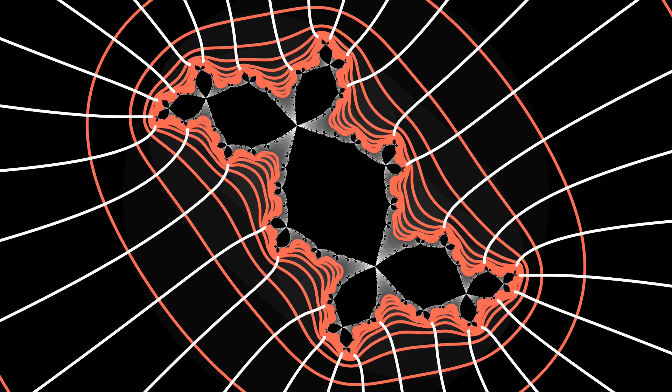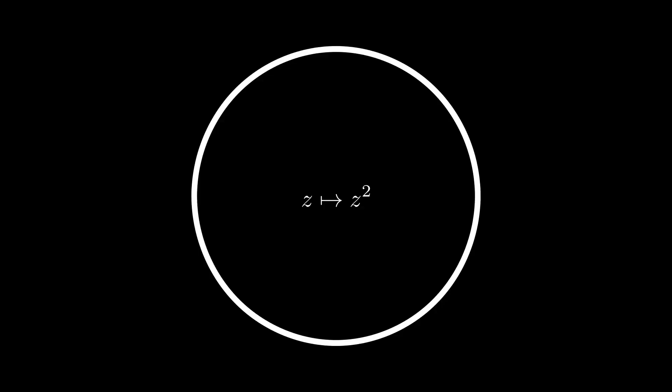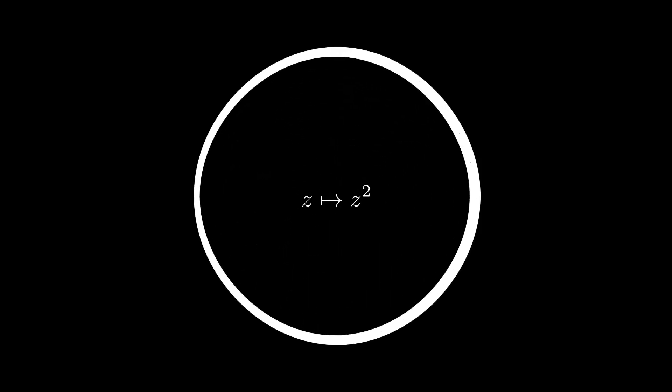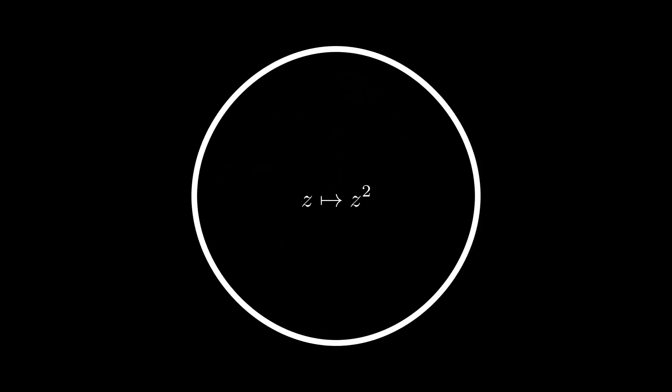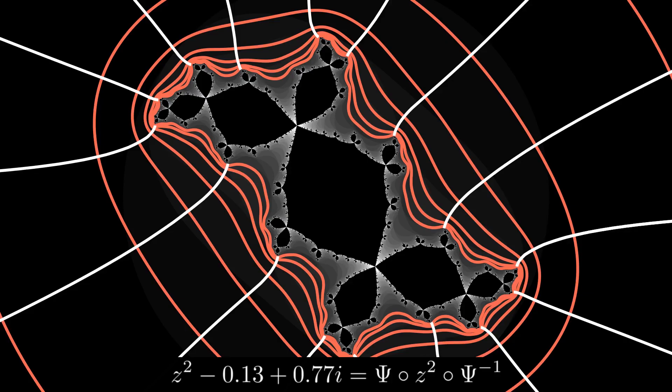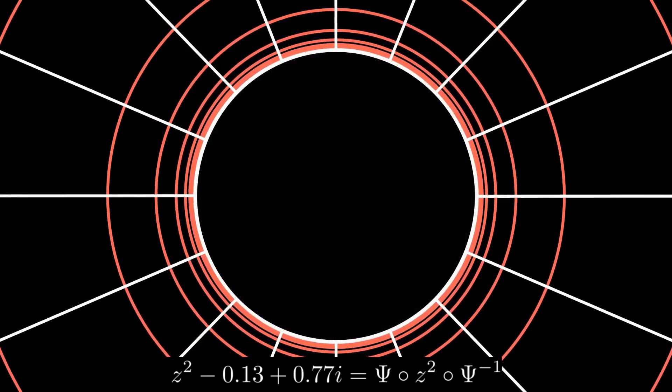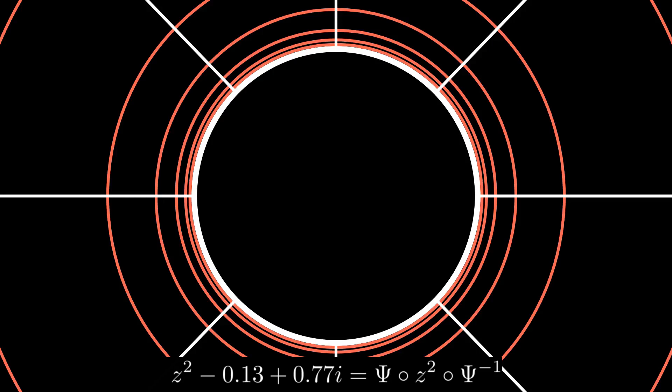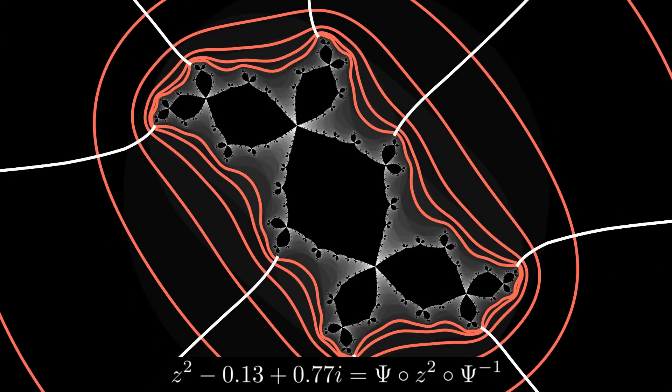We will call the images of the rays external rays of the Julia set. Considering that the unit circle is also the Julia set of the polynomial z squared, this map also defines a conjugacy between the outside of the unit disk and the outside of the Julia set. We will utilize this conjugacy on the external rays.